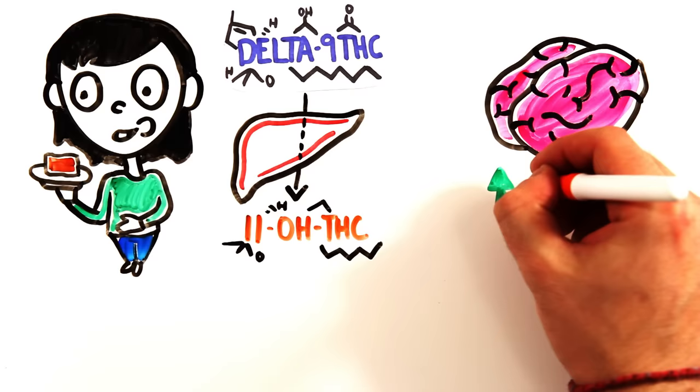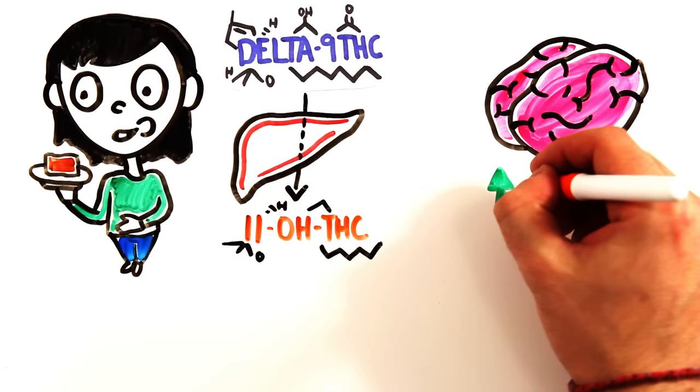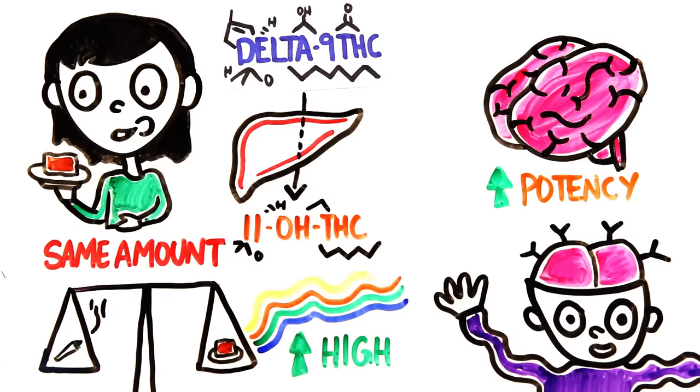So using the same amount of marijuana, you actually get more high with edibles, because it ends up creating both Delta-9-THC and 11-OH-THC, which is a stronger compound. And because there are more psychotropic types of cannabinoids acting on your neurons, you'll be high for longer.